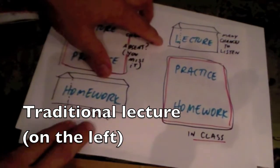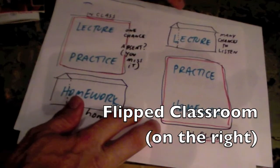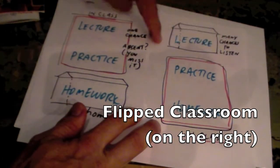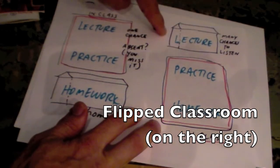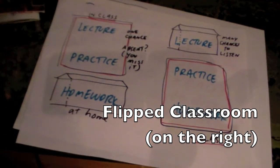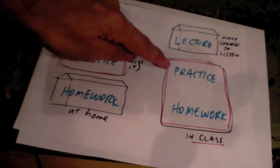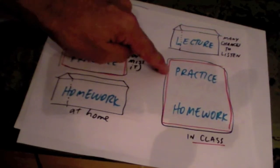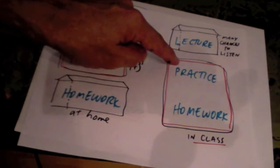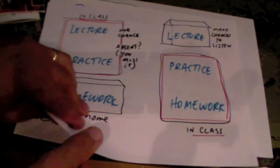The new flipped classroom is asking you, the student, to listen at home — and you have many chances to listen, whereas if it's in the classroom you get one chance, or if you're absent you sort of miss it. So then when you arrive at school you can practice and ask questions about what the lecture was about, and then the actual homework can be done in class.